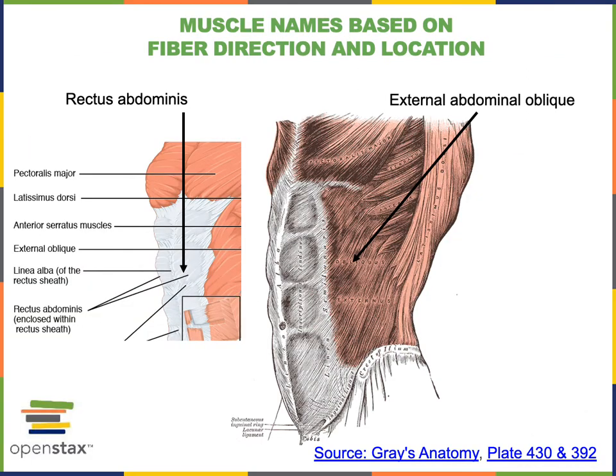Another way that muscles are named is based on fiber direction and location. For example, rectus abdominis has its fibers running straight up and down on the anterior of the abdominal region, and the external abdominal oblique has its fibers running obliquely at roughly a 45-degree angle relative to rectus abdominis in the lateral abdominal walls.